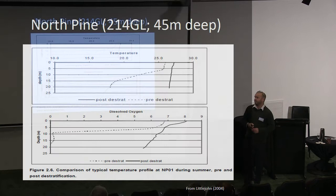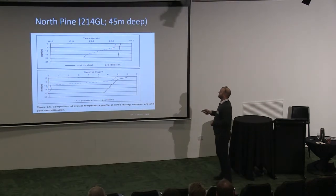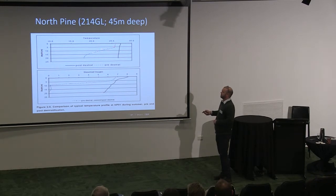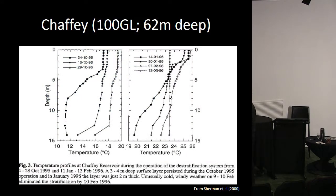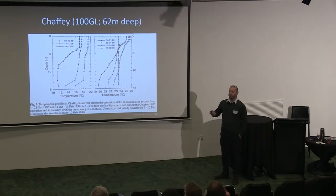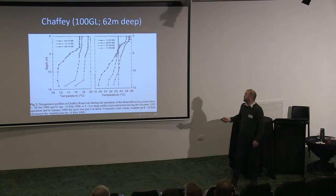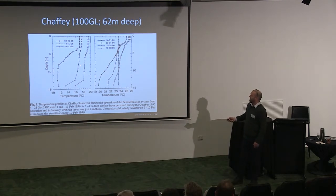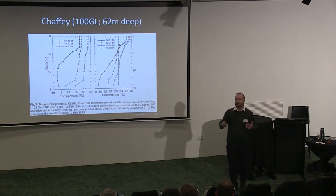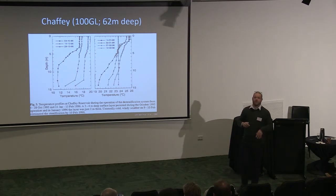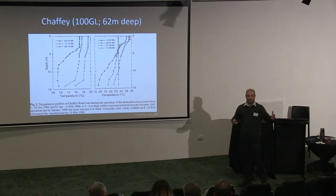We had similar data from North Pine Dam in Queensland. Pre-destratification, as you went down with depth, temperature dropped dramatically. Once they put the destrat system on, you'd go down to 20 metres in depth and there was only a one to two degree difference in temperature — effectively an isothermic storage. Another example is Chaffee Dam in New South Wales — this wasn't done for cold water pollution benefit but for water quality benefits — where we see the destrat system being turned on and isothermic profiles setting up to the point where the entire storage turns over. So if we can weaken that thermocline by putting energy in, we can end up with a destratified storage and use the existing outlet works.